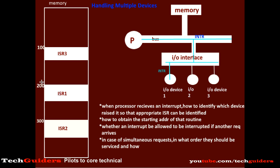And for that, how will it obtain the starting address of that appropriate interrupt service routine? Also, since there are multiple I/O devices, there is a chance that while the interrupt service routine for one device is being processed, maybe some other device may raise an interrupt. In such a case, whether that request should be accepted or ignored — meaning whether an interrupt should be allowed to be interrupted again or not. Also, when there are multiple I/O devices, there is a chance that multiple devices may raise the interrupt simultaneously, and in such cases which request should be serviced first, or in what order the requests should be serviced.